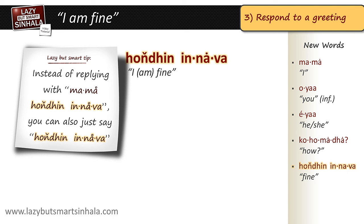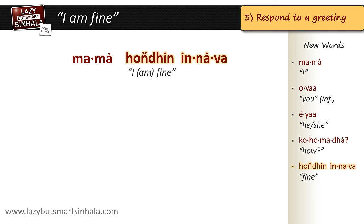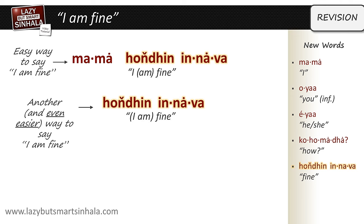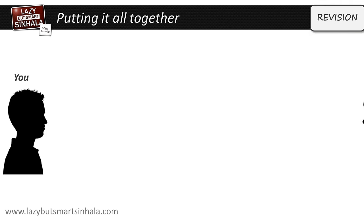Here's another helpful tip: instead of replying with mama honding innova, you could also drop the mama and just say honding innova. It is understood that you're referring to yourself — in English this is like answering 'fine' when someone asks you how are you. So we already knew an easy way of saying 'I am fine': mama honding innova. And now we have an even easier way, which is just to say honding innova. Let's use these new words and phrases in a typical conversation between you and someone familiar to you.